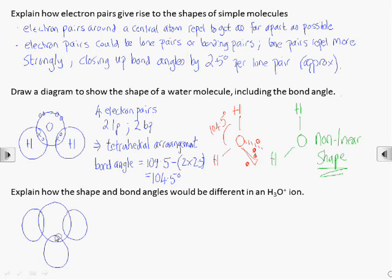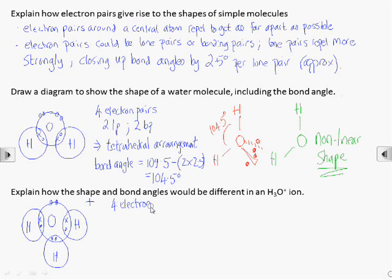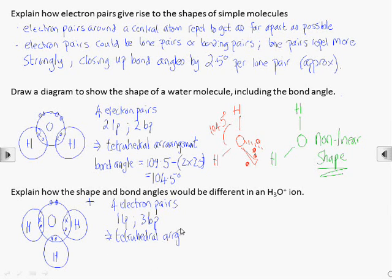For an H3O+ ion, again we start with the dot and cross diagram. We can see that it still has 4 electron pairs, and so these will still be tetrahedrally arranged around the oxygen atom. But now there are 3 bonding pairs and 1 lone pair. This means that the bond angle will be closed from 109.5 degrees to 107 degrees, rather than the 104.5 degrees we saw in water.